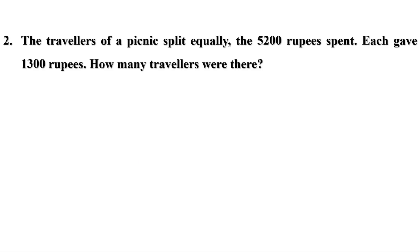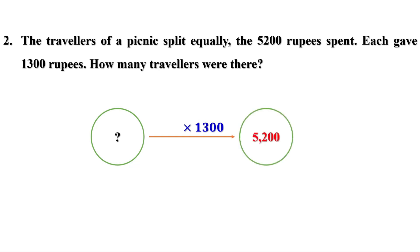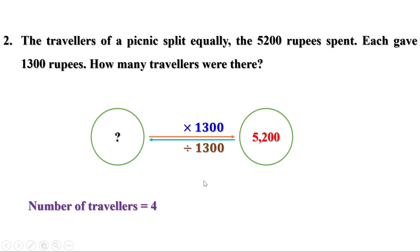Second problem: The travelers of a picnic split equally the 5,200 rupees spent. Each gave 1,300 rupees. How many travelers were there? We don't know the number of travelers, but each gives 1,300 rupees and the total is 5,200. When the number of travelers is multiplied by 1,300, the amount is 5,200. To get the number before multiplication, divide 5,200 by 1,300. That is 4. The number of travelers is 4.